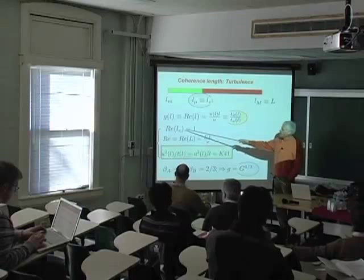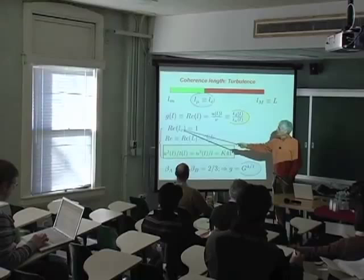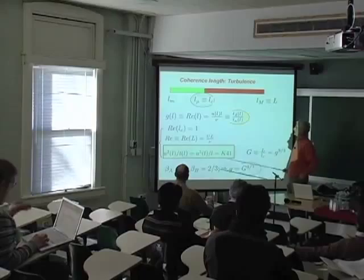One condition is that, by definition, the coherence length is the length at which the coupling strength — remember that Reynolds number is a competition between diffusion and advection, and this competition is scale-dependent — so by definition, the coherence length is the length at which the two mechanisms are in exact balance. That's the definition.